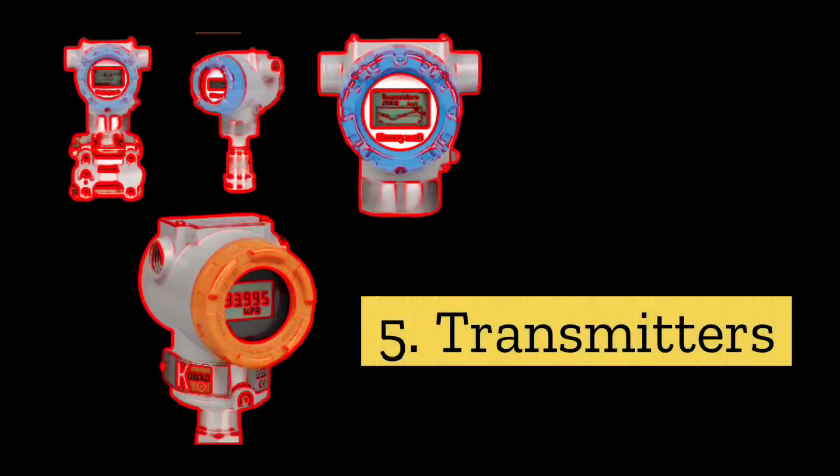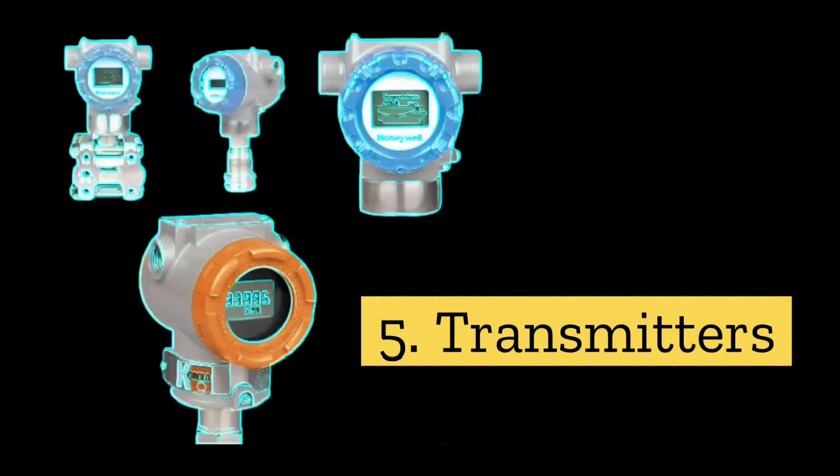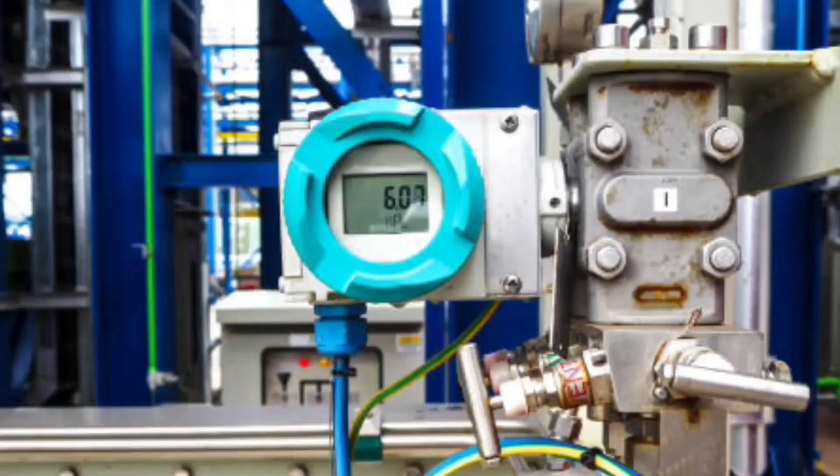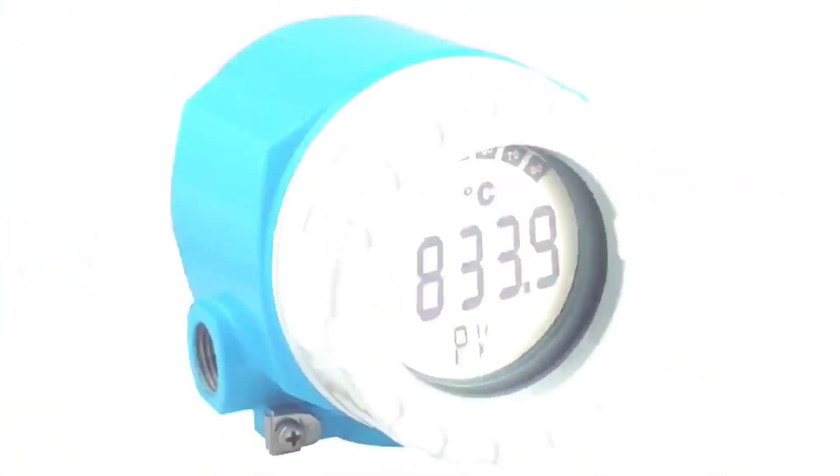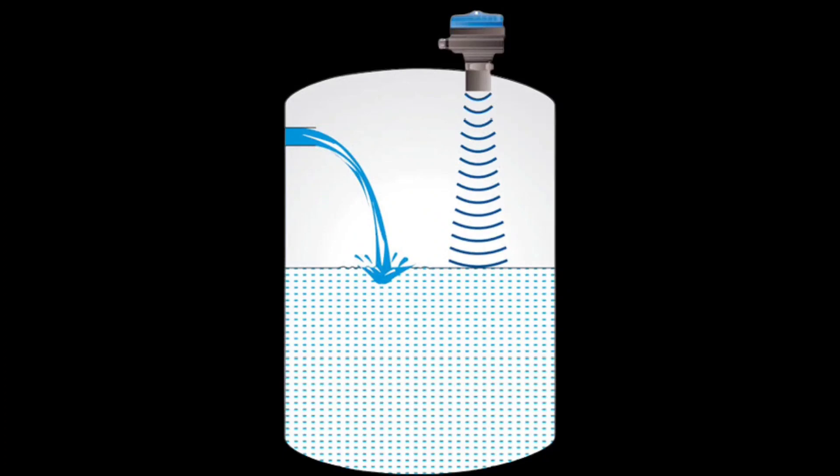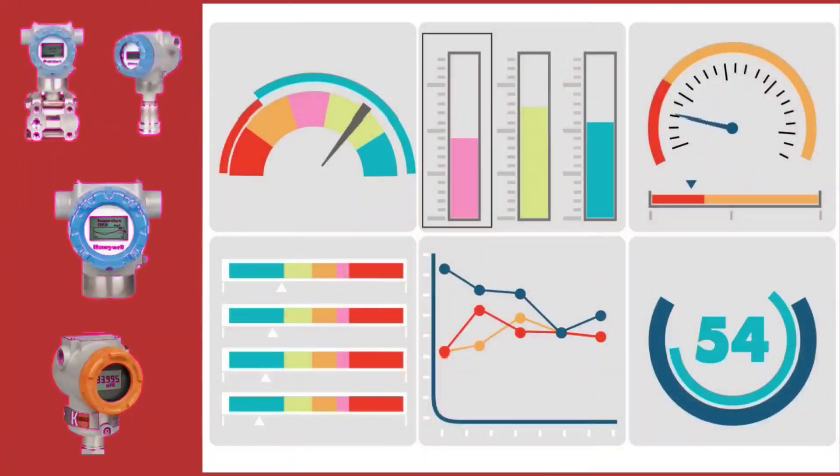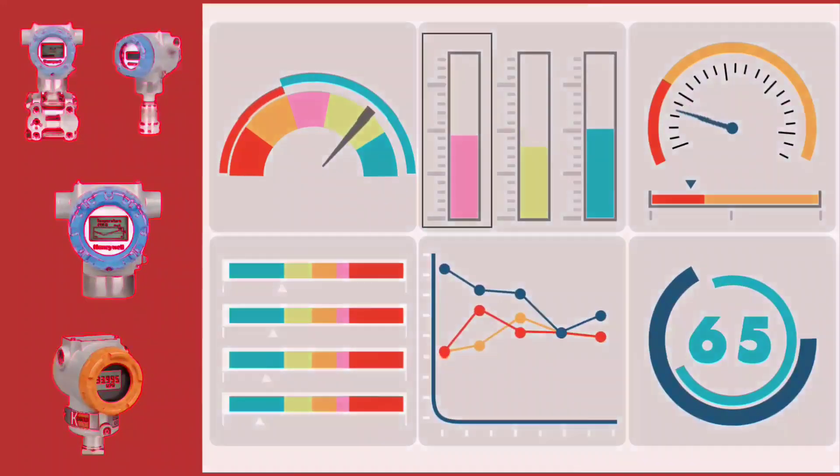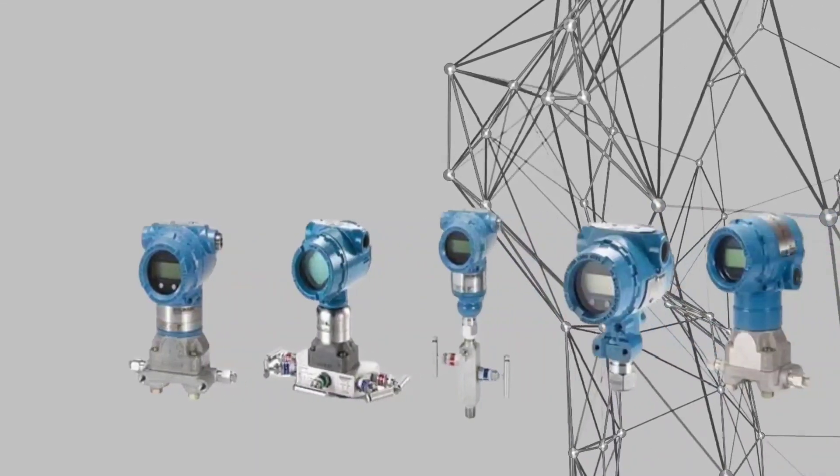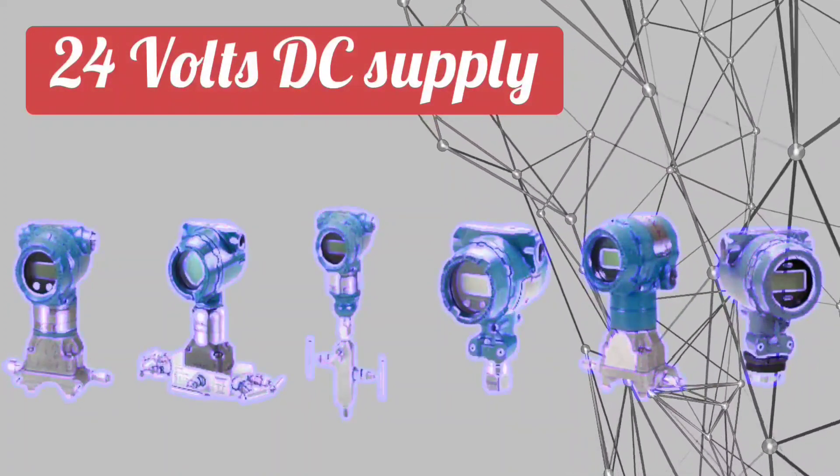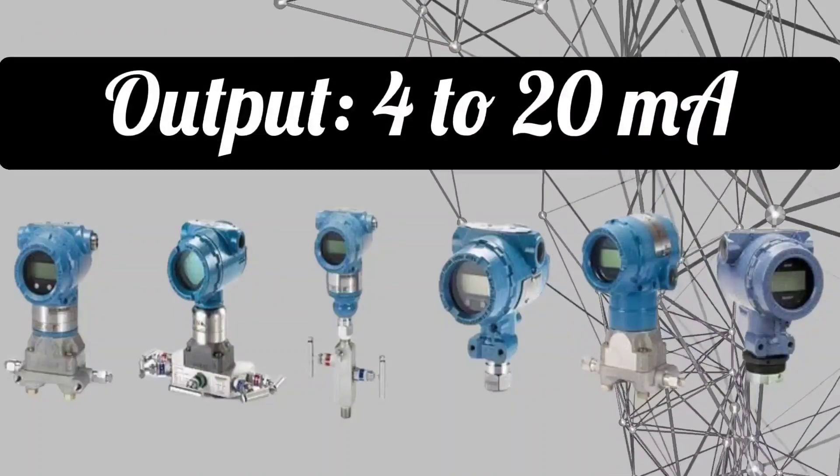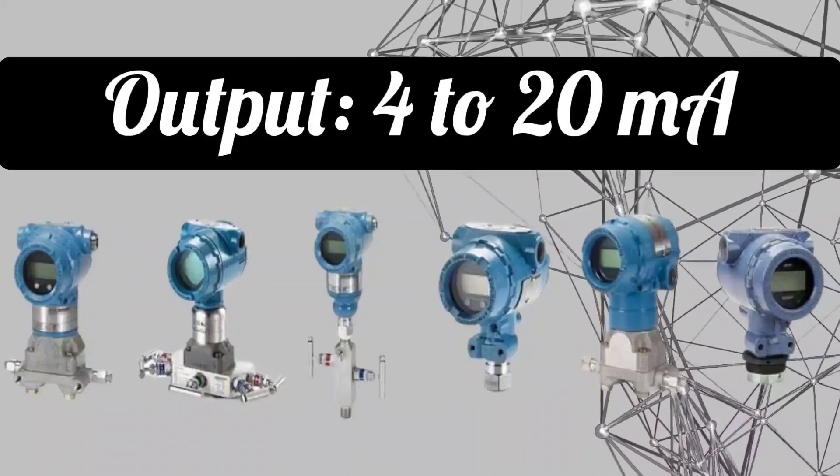Transmitters. Many transmitters are used but pressure transmitters, differential pressure transmitters, temperature transmitters, level transmitters, all these are mostly used. They are used to measure and transmit parameters. Usually, to all transmitters, 24V DC supply is given. And their output is 4 to 20 mA.